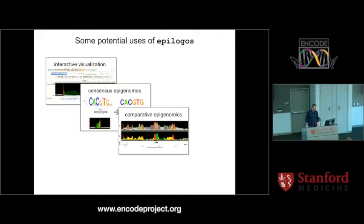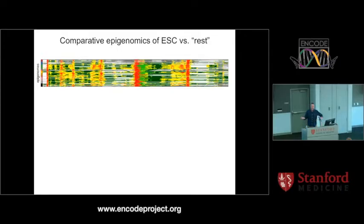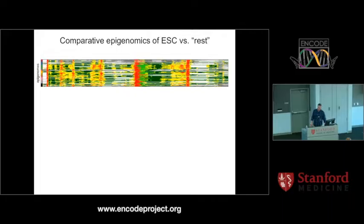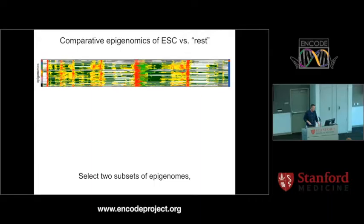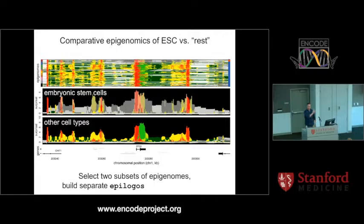Something I think is much more interesting is comparative epigenomics. Let's say you're interested in finding regions that are the most different between stem cells and non-stem cells — embryonic stem cells and other cell types. EpiLogos is perfectly suited for this. The red rows here indicate embryonic stem cell samples in Roadmap. We're going to compare those red rows for the whole genome to the blue rows to find regions that are very different between the two groups. We select these two subsets, build EpiLogos for both, and use a statistical test at every position to assess how different they are.